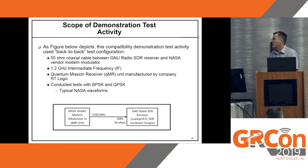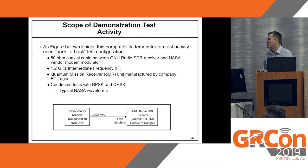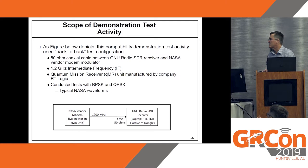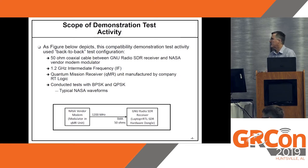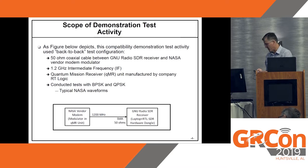This chart shows a high-level test configuration. It's a back-to-back test configuration. The NASA vendor modem modulator is on the left. It transmitted over a coaxial cable — 50-ohm SMA — with a 1.2 GHz intermediate frequency to the GNU Radio SDR receiver. It used BPSK and QPSK.